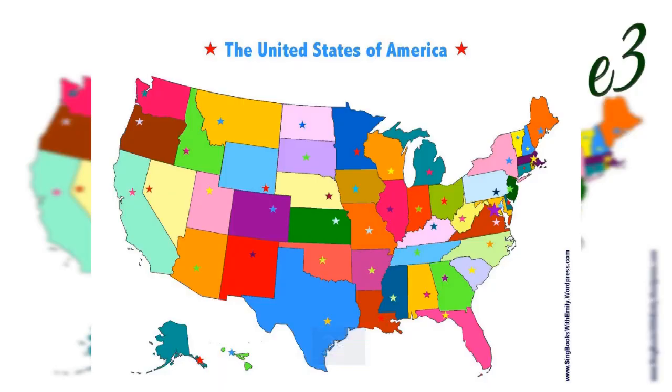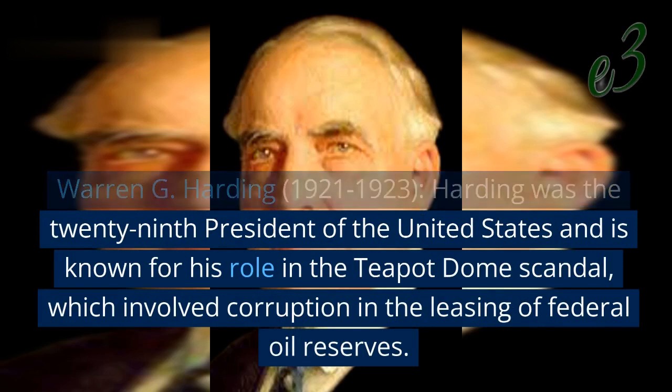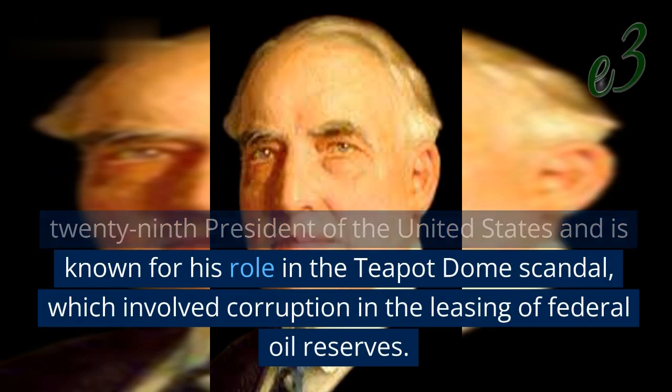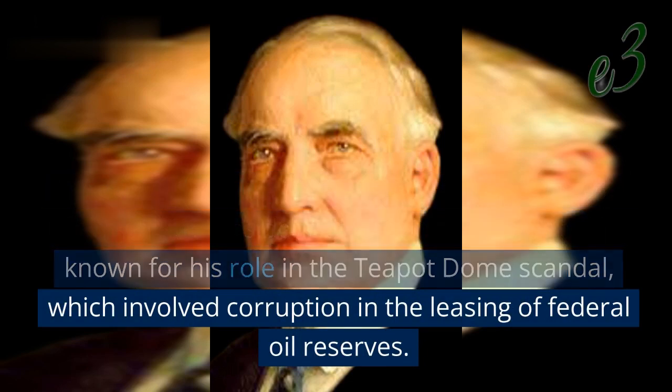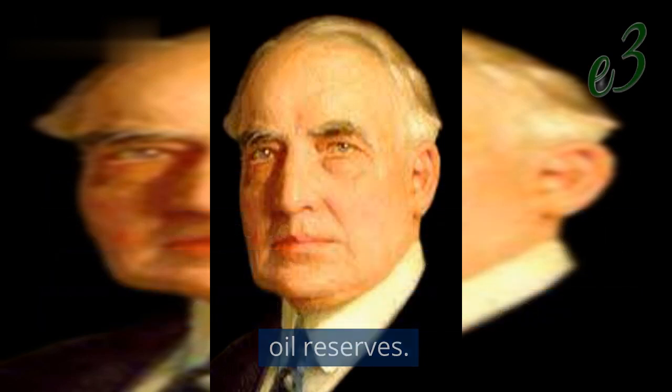29. Warren G. Harding, 1921–1923. Harding was the 29th President of the United States and is known for his role in the Teapot Dome scandal, which involved corruption in the leasing of federal oil reserves.